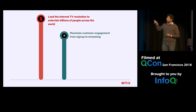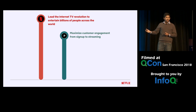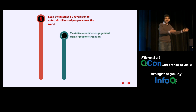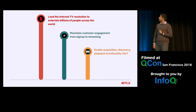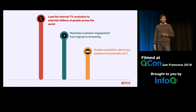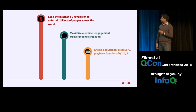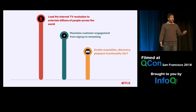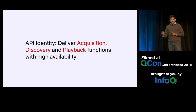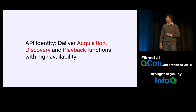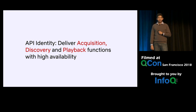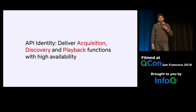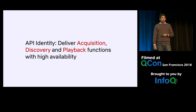Within Netflix, we have the product engineering organization — its purpose is to maximize customer engagement across all Netflix functions, from sign-up all the way to streaming. One level down, within the product engineering organization, we have the edge engineering org, whose sole purpose is to enable acquisition, discovery, and playback experience with high availability. Within the edge engineering organization, we have the API service, and the API service's identity is to deliver acquisition, playback, and discovery functions around the clock.